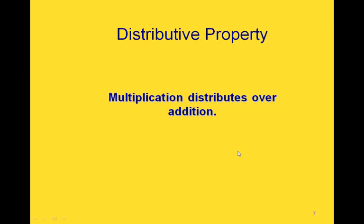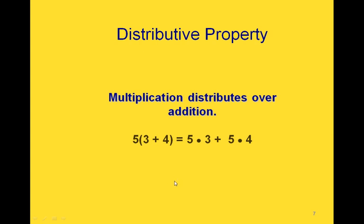The distributive property says that multiplication distributes over addition. If we have a combination of multiplication and addition, we would distribute the 5 to both elements inside the parentheses. That would give us 5 times 3 plus 5 times 4.